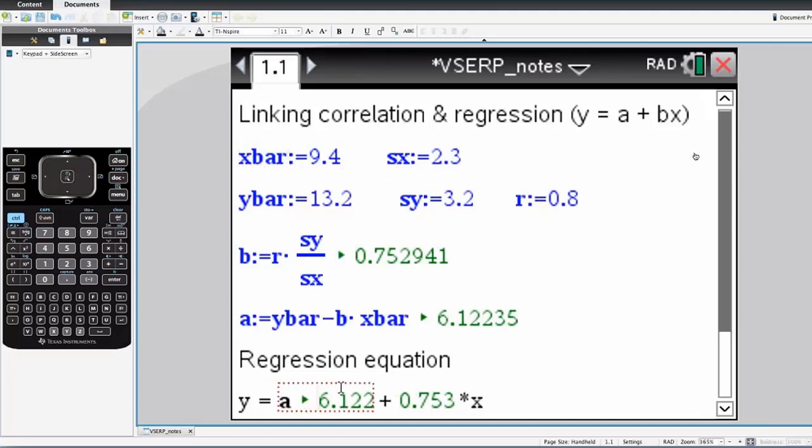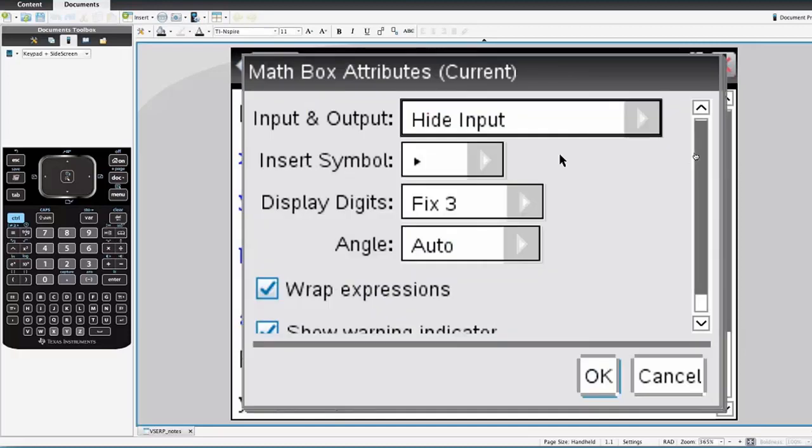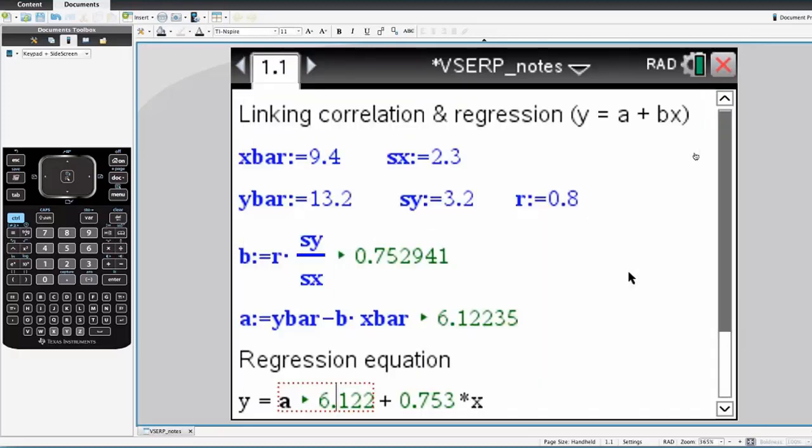And you'll see here, in this regression equation, the parameter for A has got hide input. So it's just showing the output, the results of the value of A rather than the letter A. And it's also showing fix 3 rather than the precision that was used in the other calculations there.